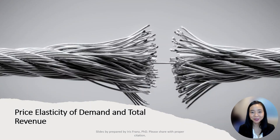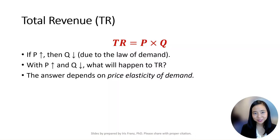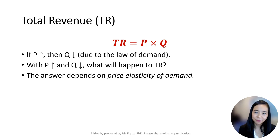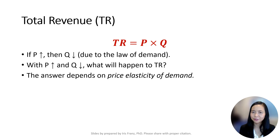Hello everyone, Iris Rons here. Today we are going to talk about price elasticity of demand and total revenue. Total revenue is equal to price times quantity. Due to the law of demand, when we raise the price, quantity demanded drops. As price and quantity demanded are moving in opposite directions, what happens to the total revenue? The answer lies in price elasticity of demand.